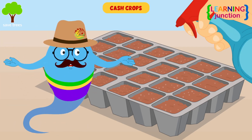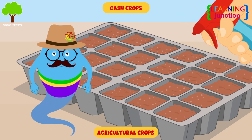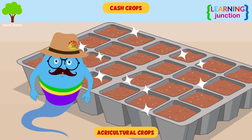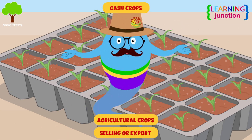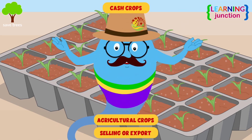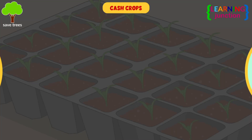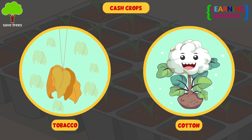Cash crops: these are agricultural crops that are planted for the purpose of selling on the market or for export to make a profit. For example, tobacco, cotton, etc.